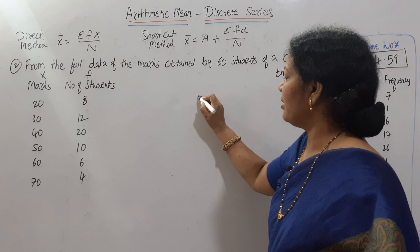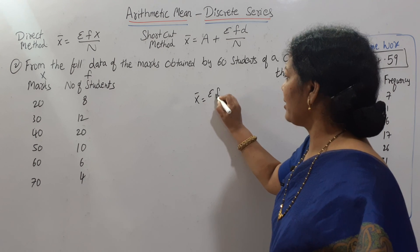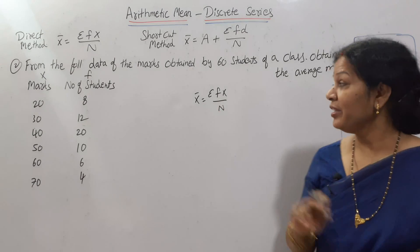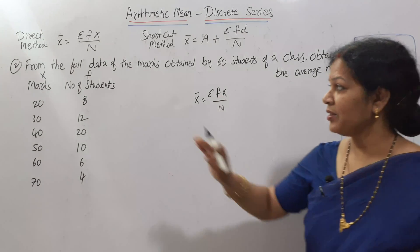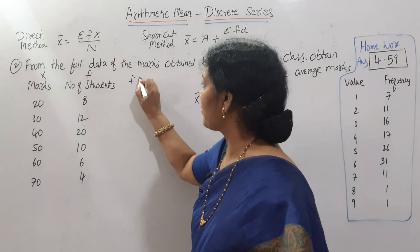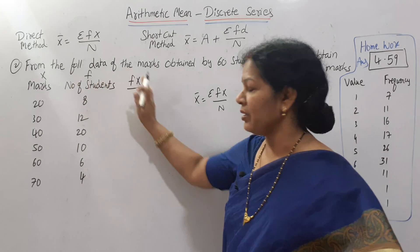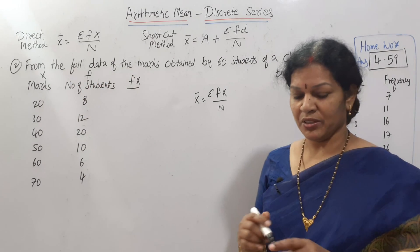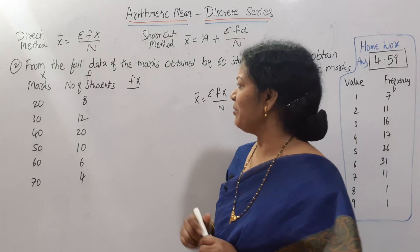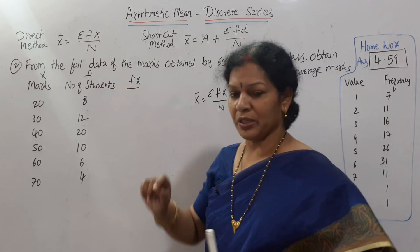First, let me write the formula: X̄ = ΣFX / N. We need F × X. F is frequency and X is the marks value. Multiply them to get FX. Let me draw a table clearly. We need FX by N, so F into X.